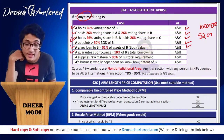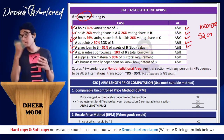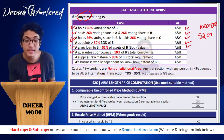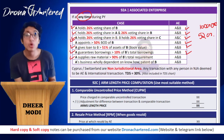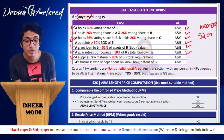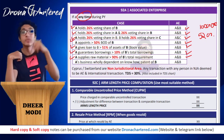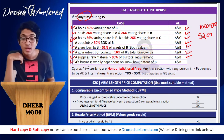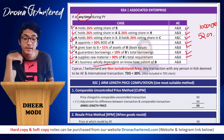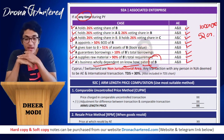Sixth condition: if A guarantees borrowings of B greater than 10% of B's total borrowings, A and B are associated enterprises. Seventh condition: if A supplies raw materials greater than 90% of B's total annual requirements, A and B are associated enterprises. Eighth condition: if A's business is wholly dependent on the know-how or patent of B, A and B are associated enterprises.